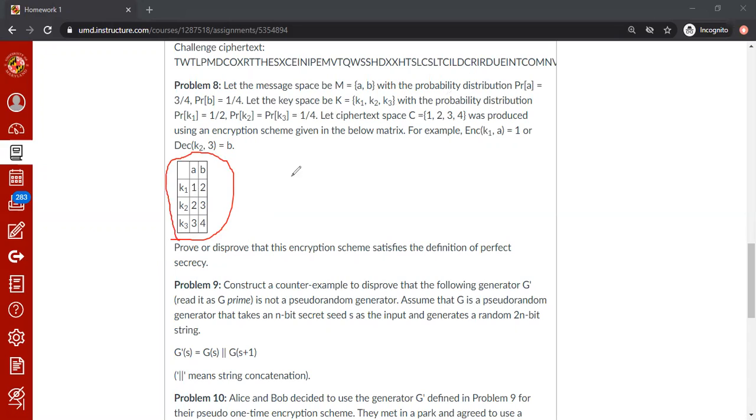One problem is that if the ciphertext is 1, what can I say? I can immediately tell that my plaintext must be a, because that's the only scenario where I get ciphertext to be 1. So our intuition is telling that this cannot be a perfect secret.